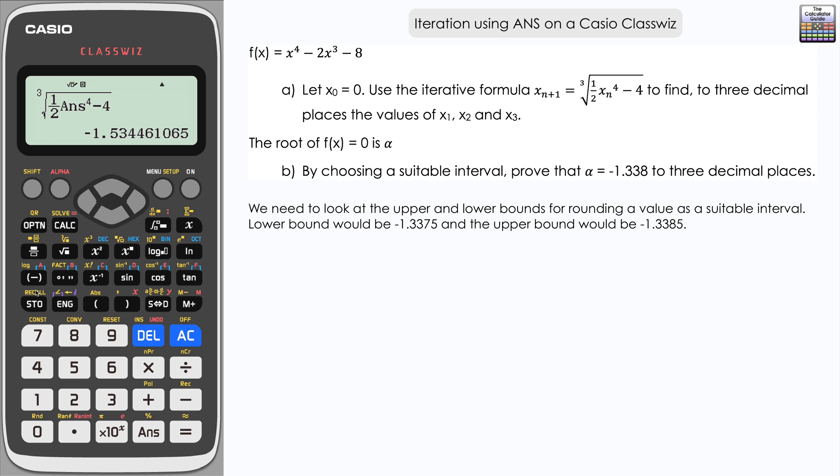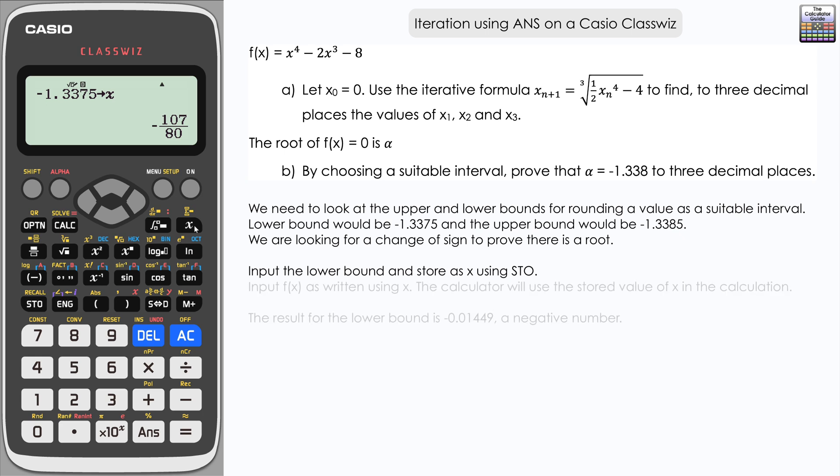From there or anything above that, we would round to negative 1.338. Then we would take the upper bound as being negative 1.3385. Those are the two values we're going to use in our original f(x), and what we're expecting to find is we're looking for a change of sign. We're going to have a negative result and a positive result. That change of sign will prove that there is a root in that interval. I'm going to start with my lower bound, which is negative 1.3375, and I'm going to store that in x. Then I'm going to write out f(x): x to the power 4 minus 2x cubed minus 8. Press equals, and here we have the result from using the lower bound: negative 0.01449 and so on.